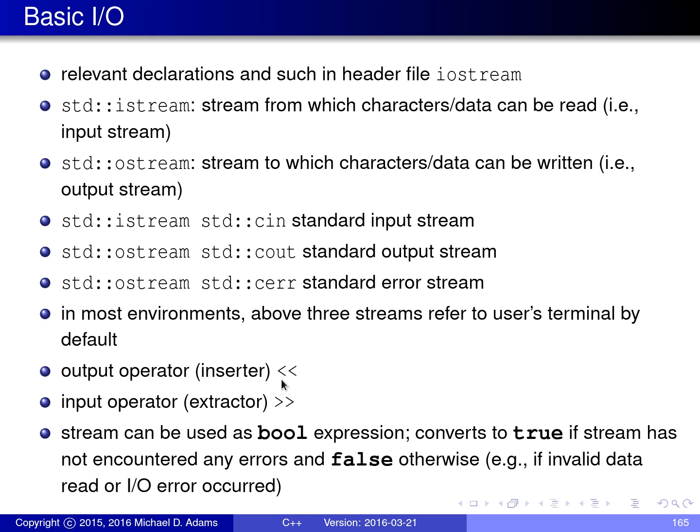The << operator is used for doing output. It's called a stream inserter and can be used to write data to an output stream. The >> operator is used for input — it's called a stream extractor and is used to extract data from an input stream. Stream objects of type istream and ostream can be used in Boolean contexts: the expression evaluates to true if the stream has not encountered any errors, and false otherwise, giving you a convenient way to check for IO errors.